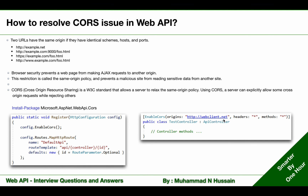The origins will keep the URLs which we want to allow. On a side note, remember: do not include a forward slash at the end of the origins URL. I hope you got the answer.